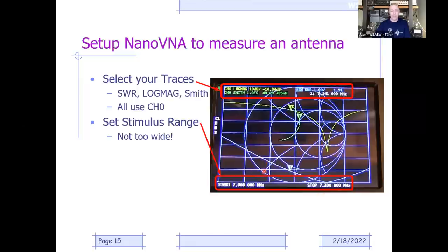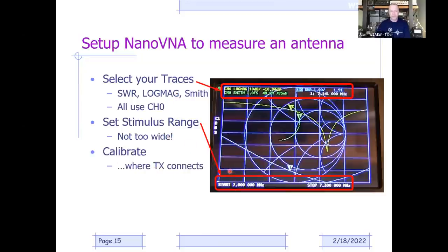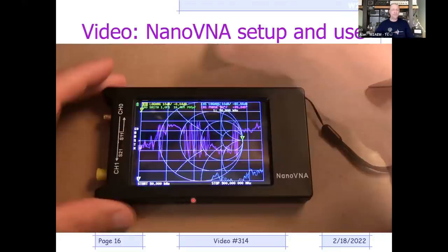These nanoVNAs allow you to save multiple calibration slots—you might have one set up wideband and others for specific bands. Set your traces, set your stimulus range, then run your calibration; calibration sets up the measurement plane. It's good practice to calibrate where your transmitter connects so the nanoVNA sees what your transmitter sees. I'll now play a video—about six minutes—that shows those steps and also demonstrates using the nanoVNA while adjusting a manual antenna tuner.